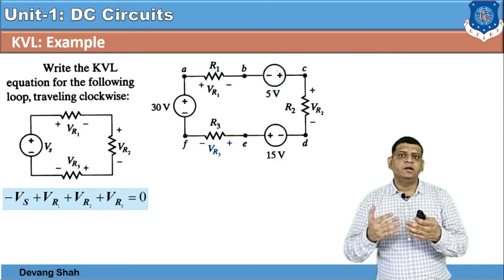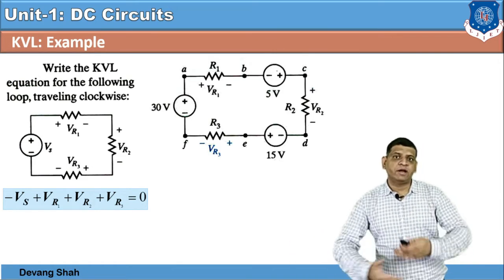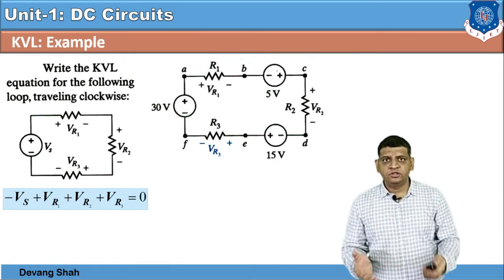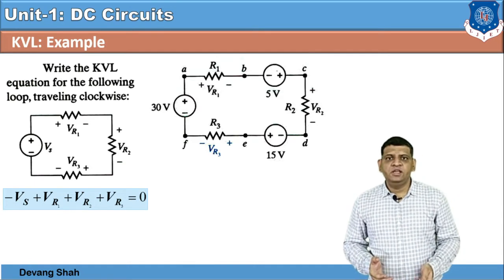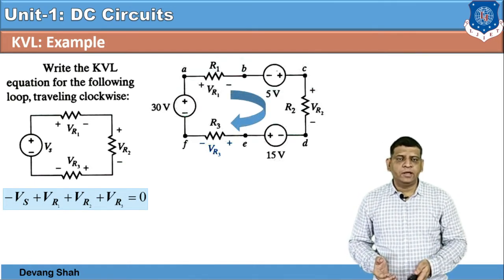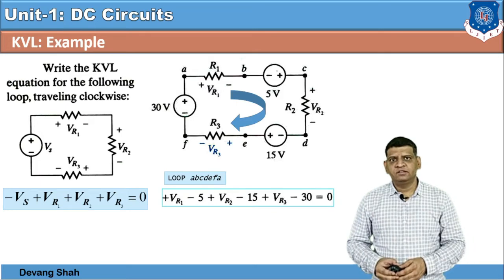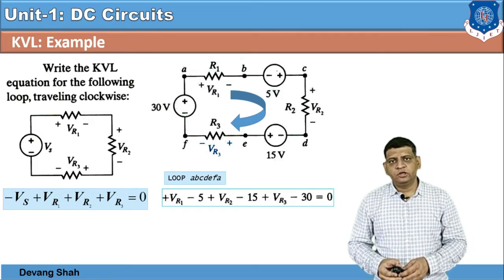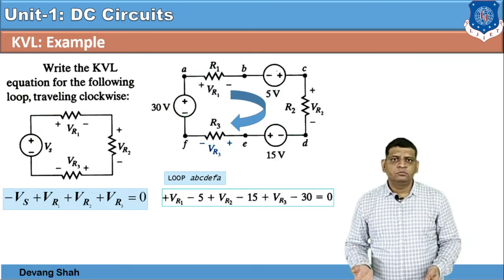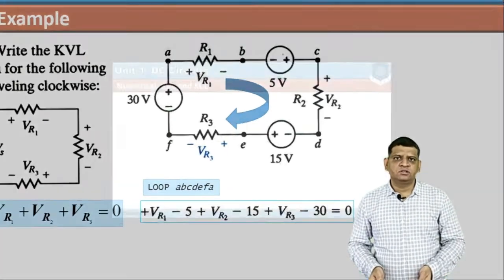This is applicable to an individual loop. In this particular loop — A, B, C, D, E, and F — if we apply the KVL equation, it looks like: the summation of sources equals the summation of voltage drops across resistances. This is how you apply KVL to any loop.